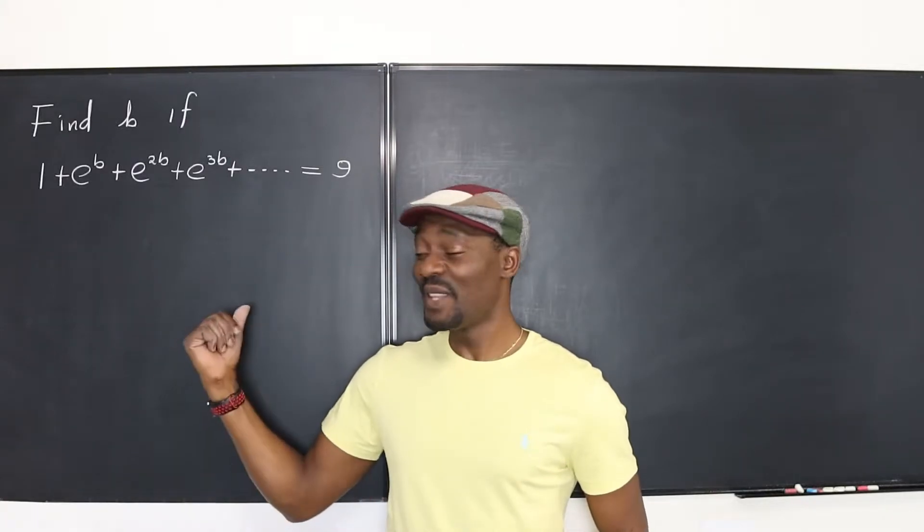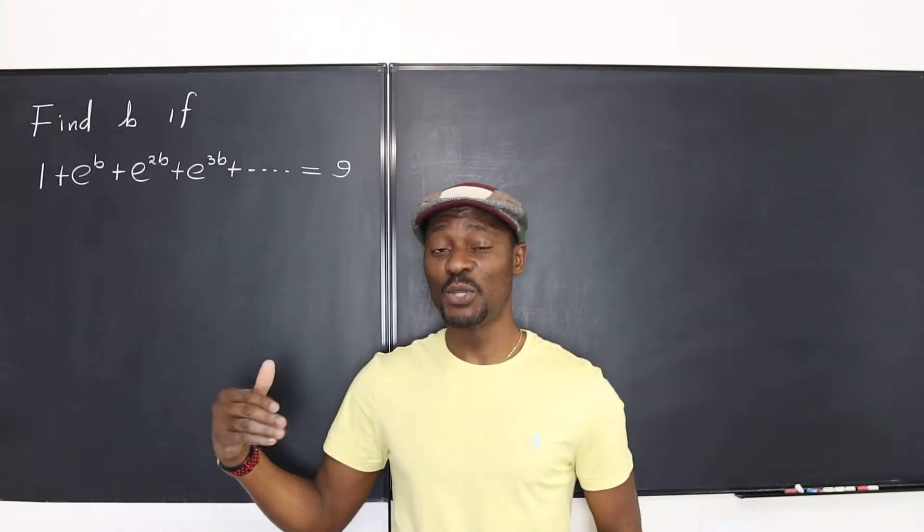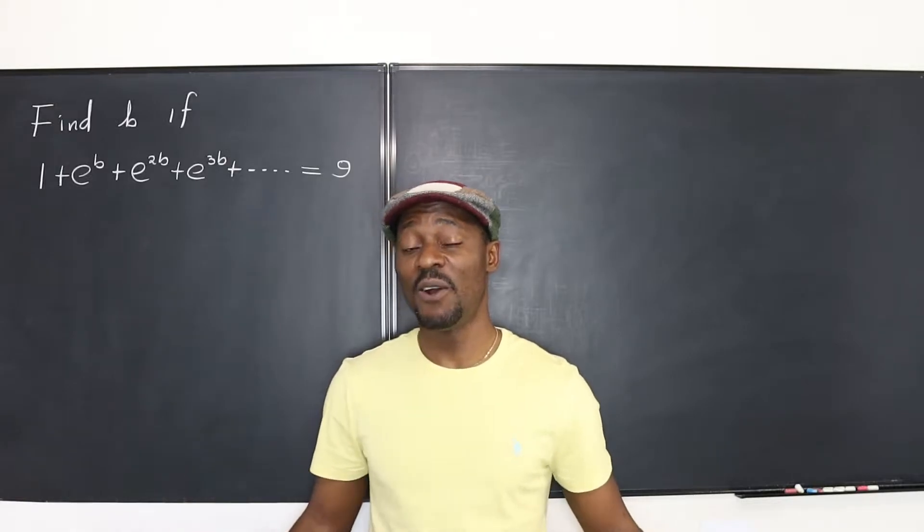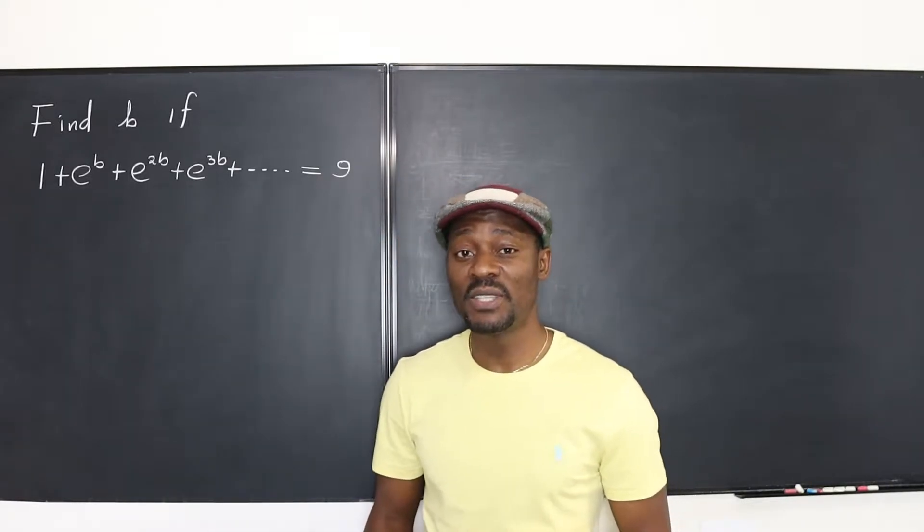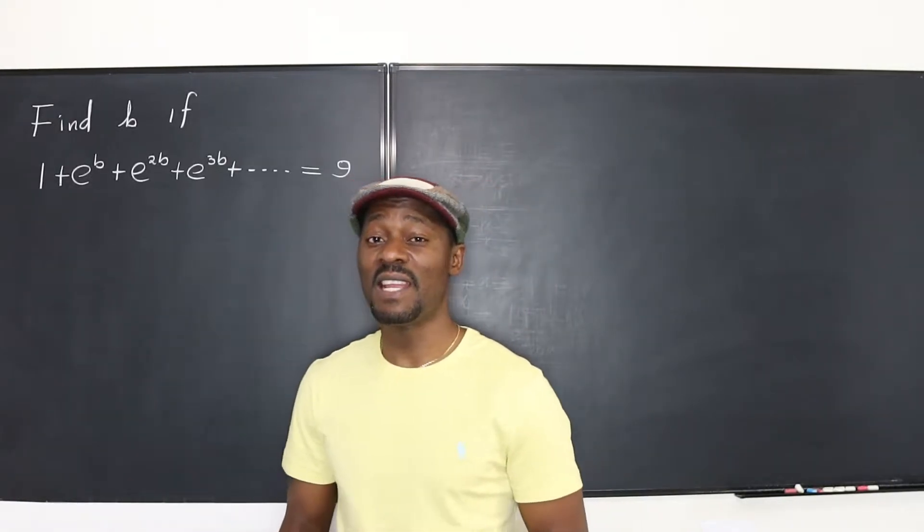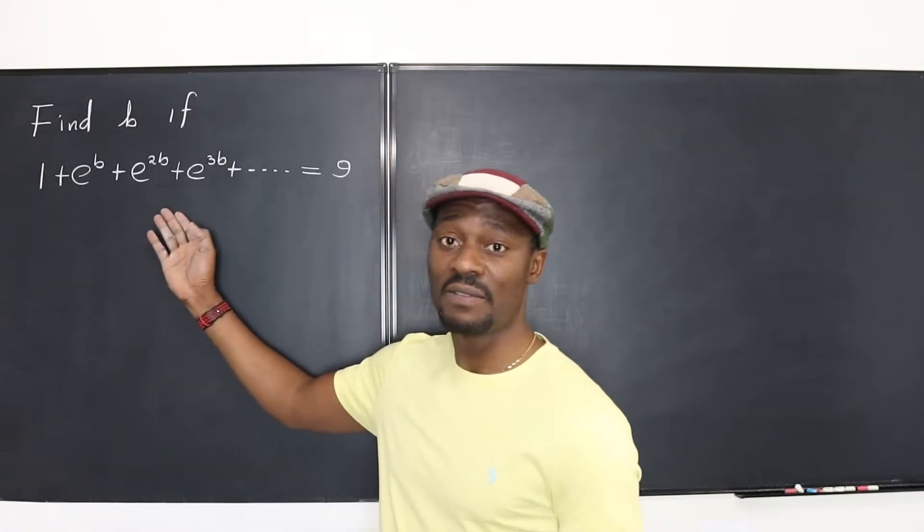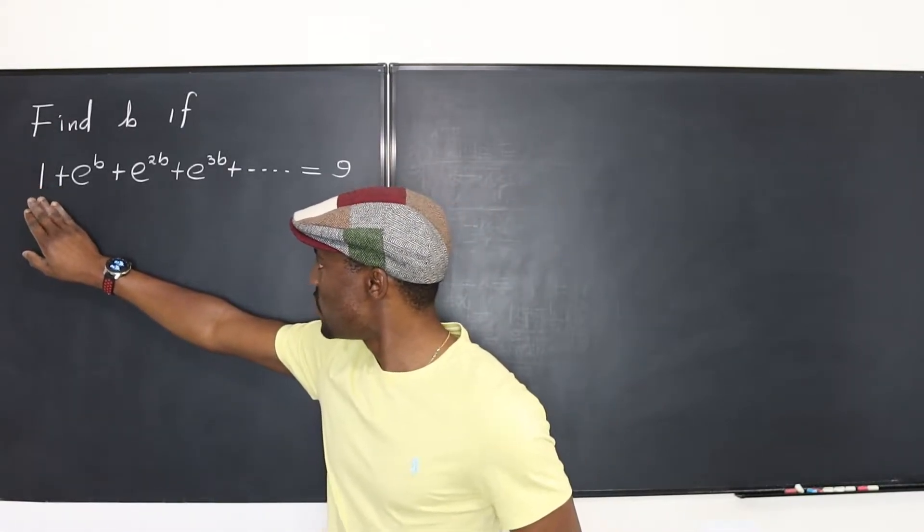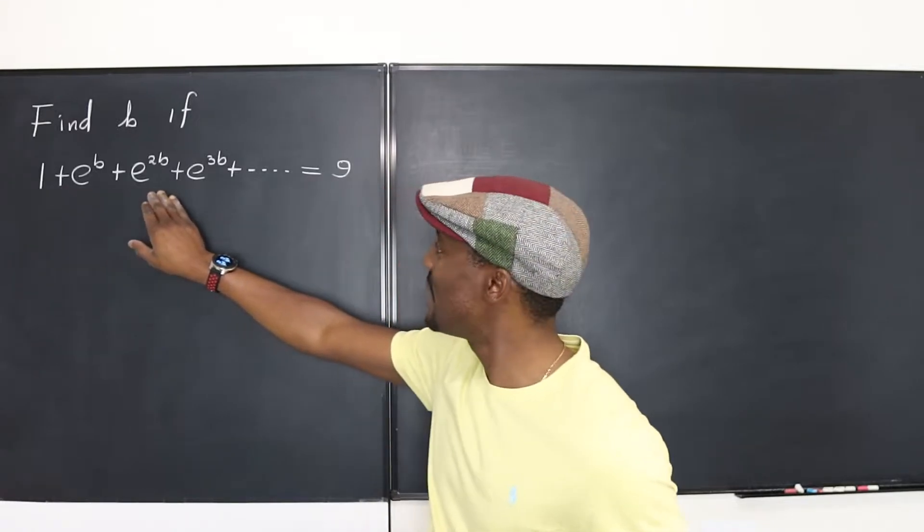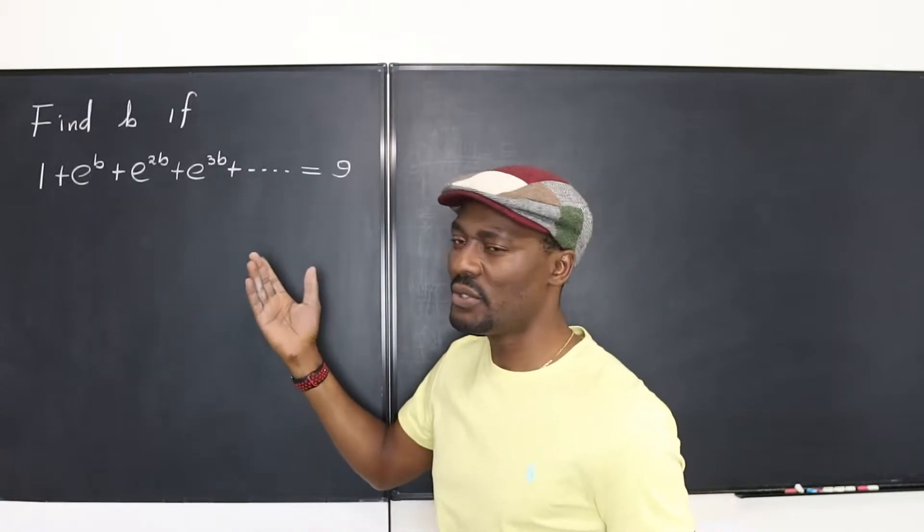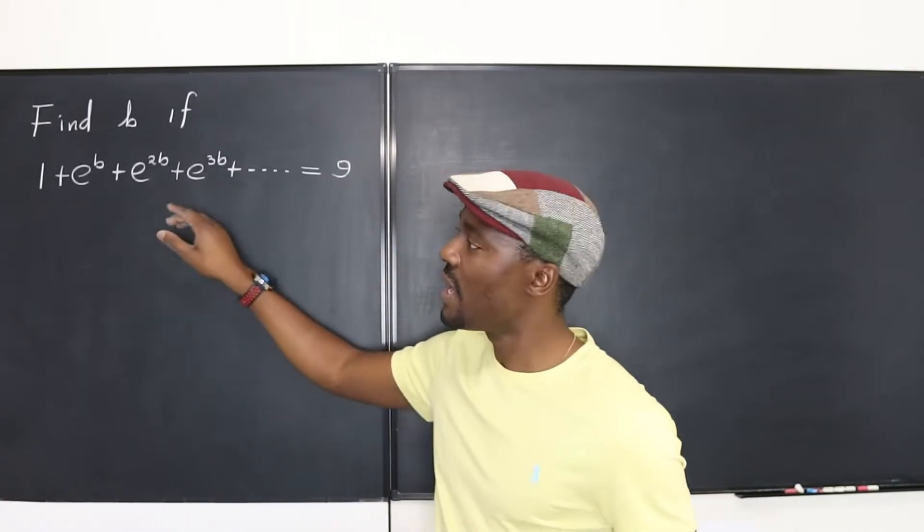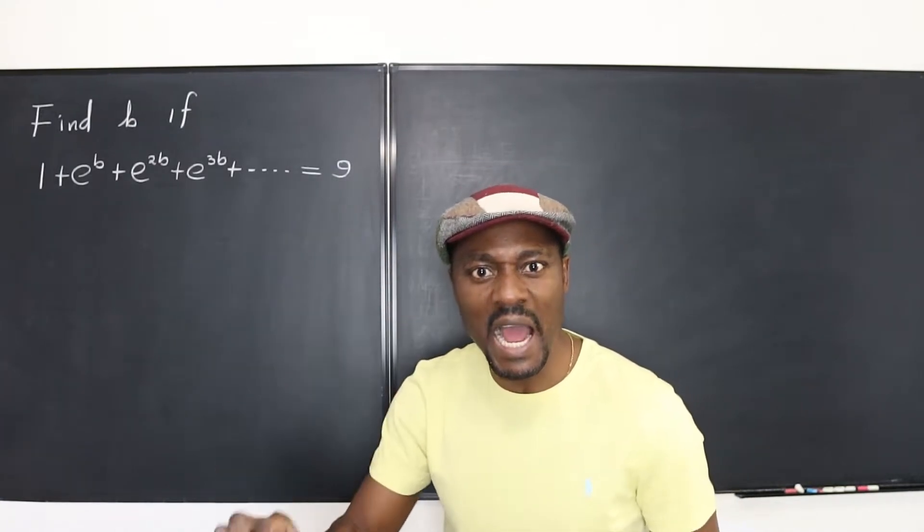Welcome to another video. Now, this is going to be a short one because I just want to show you one of those things you need to know while you're going into geometric series and power series and infinite series. Because this is an infinite series. It's just adding terms together that go to infinity. But this question says when you add up all the terms together, you're going to end up with precisely nine.